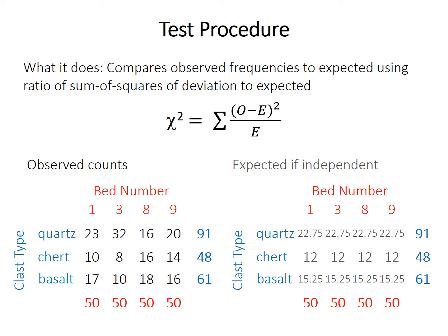The test compares the observed frequencies to the expectation using a ratio where the numerator is the sum of squares of the deviation — observed minus expected — divided by the expected value. The tables shown here display the observed counts on the left and the expected counts on the right. For example, because there are 91 quartz clasts across all four samples, the expected count if abundances were independent of sample would be 22.75. For each cell — each row and column combination — you compute observed minus expected, squared, divided by expected, and then all of these values are summed to give the chi-squared test statistic.